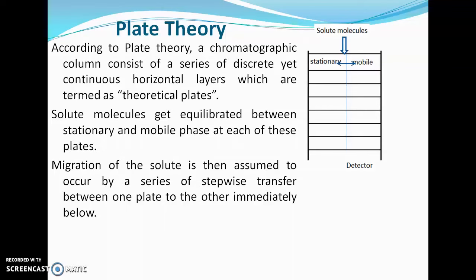Migration of solute is assumed to occur by a series of stepwise transfers from one plate to the next plate below it. The mobile phase is moving and carries the 50 solute molecules to the second plate, where equilibration occurs again — 25 molecules enter the stationary phase and 25 remain in the mobile phase. These 25 molecules are then carried to the third plate by the mobile phase.